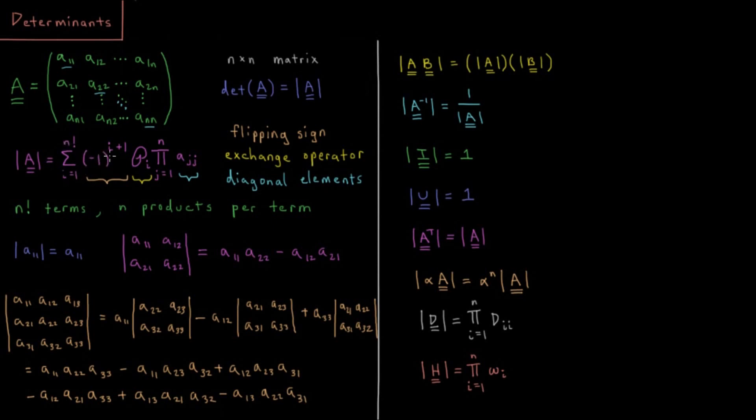We have negative 1 to the i plus 1. So this is flipping signs every time we increase i. So it goes from positive, negative, positive, negative, et cetera, all the way as we go.